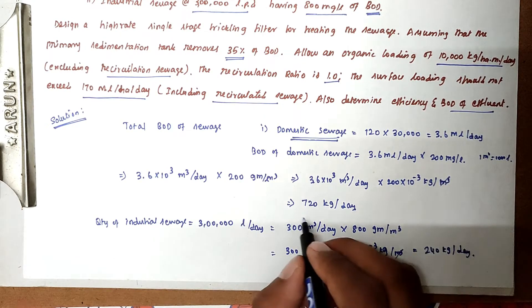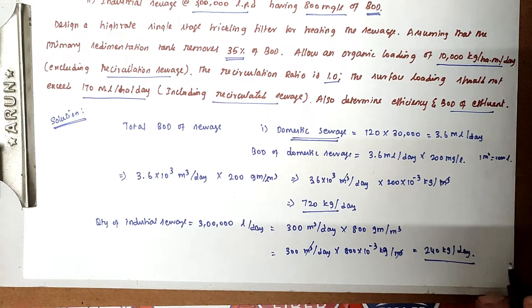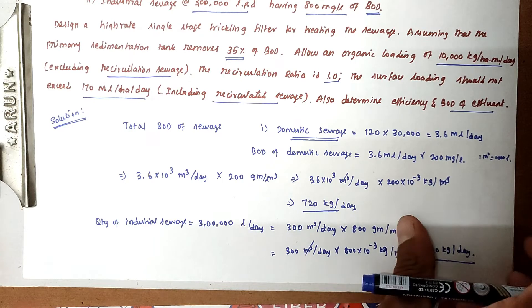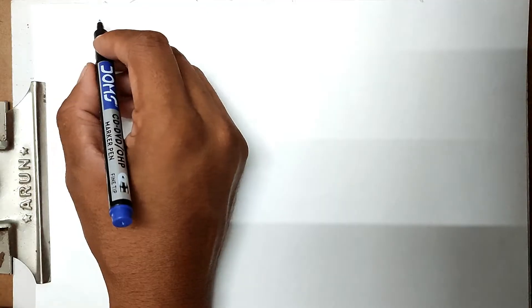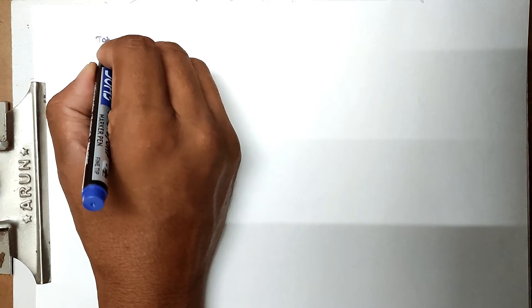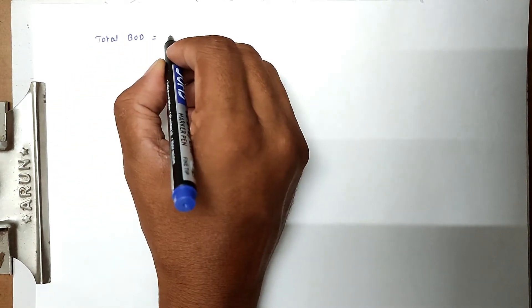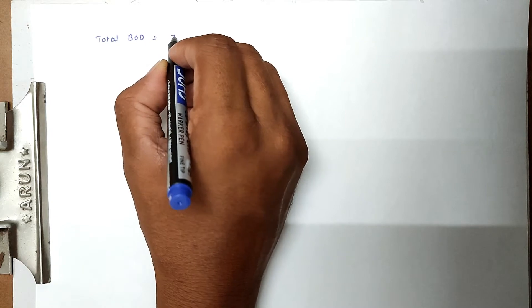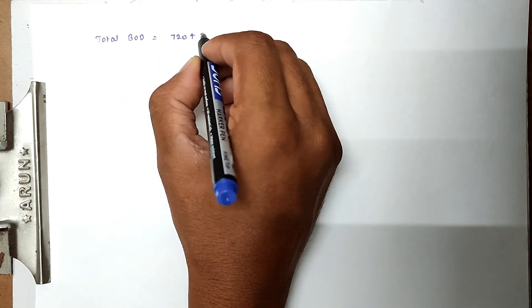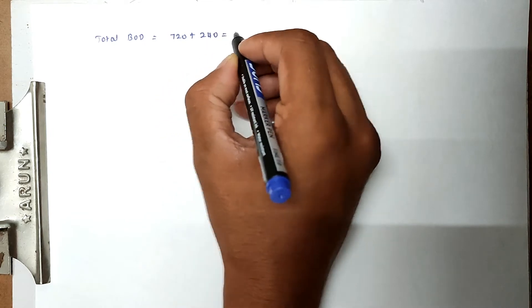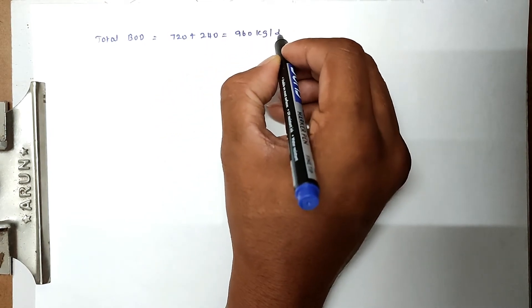So domestic BOD is 720 kg/day and industrial BOD is 240 kg/day. Adding them gives the total BOD equal to 720 + 240 = 960 kg per day.